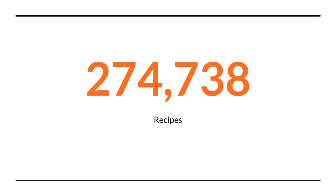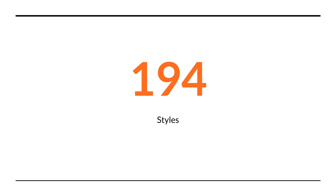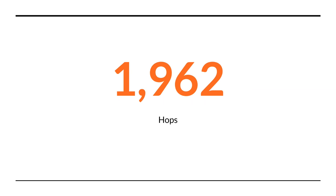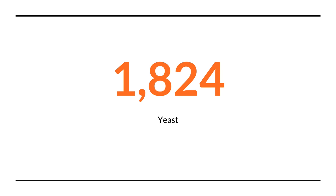Some stats: this is what I came up with in terms of groomed, clean recipes. There were a ton I had to throw out — just not good data. About a quarter million recipes, 194 distinct styles — not all of them BJCP approved. Over 2,000 different fermentables: when I say fermentables, I mean malts or grains, sugars. Almost 2,000 hops, about the same number of yeast.